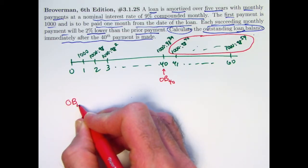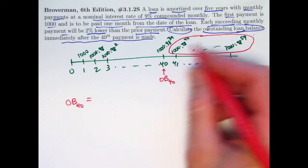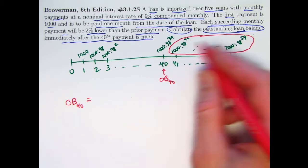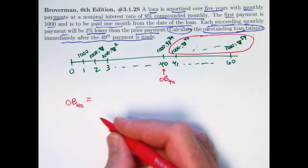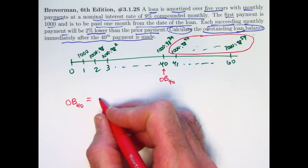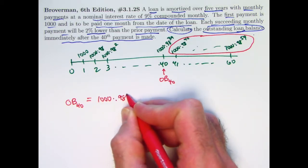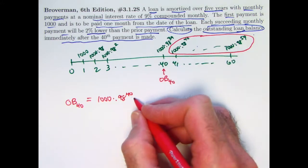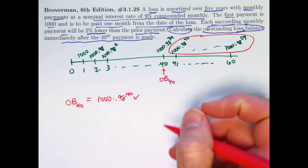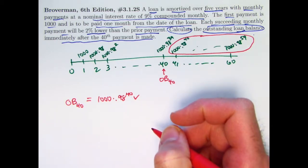So by what I just said, that loan balance at time 40 is going to be the present value of this thing, this sequence, this annuity, as an annuity immediate. Find its present value one period before the first payment there. Let's go ahead and write that out as a sum. You've got $1,000 times 0.98 to the 40th power. That payment needs to be discounted back by one month, multiplied by V, where V would be the monthly discount factor, not the annual one.